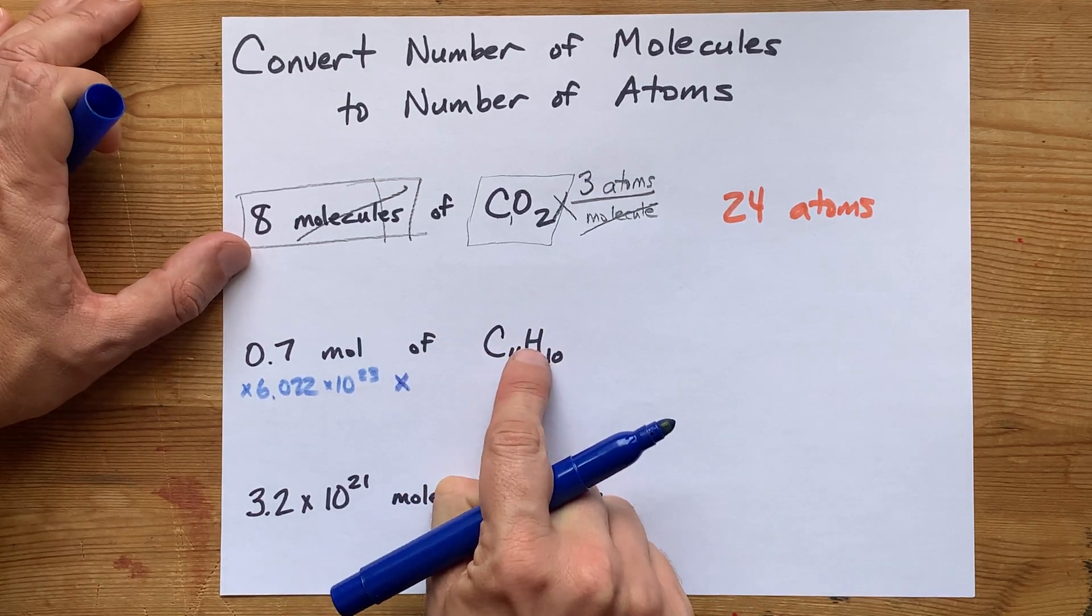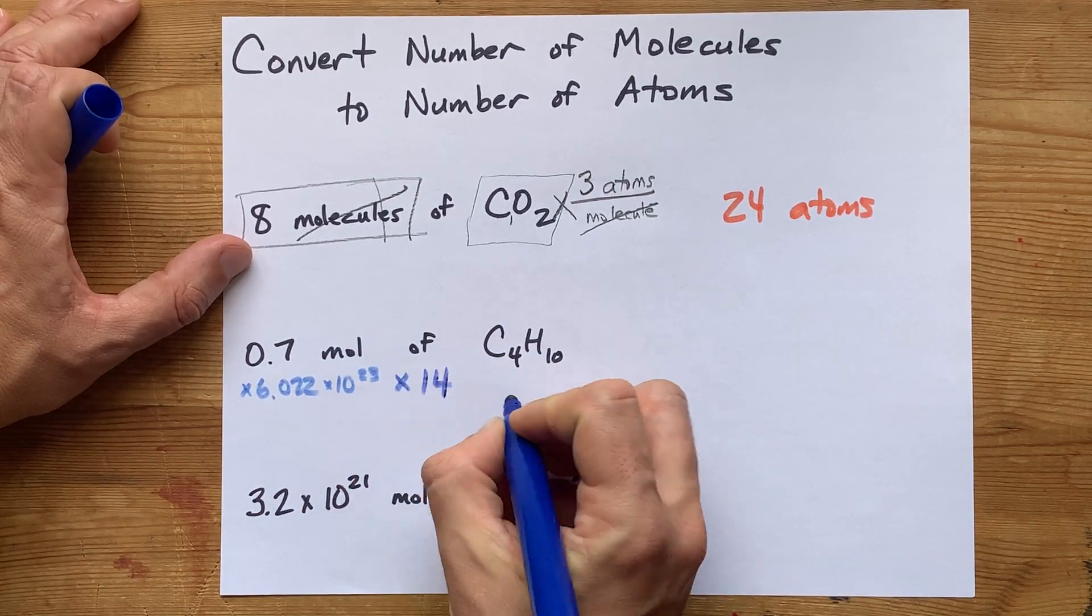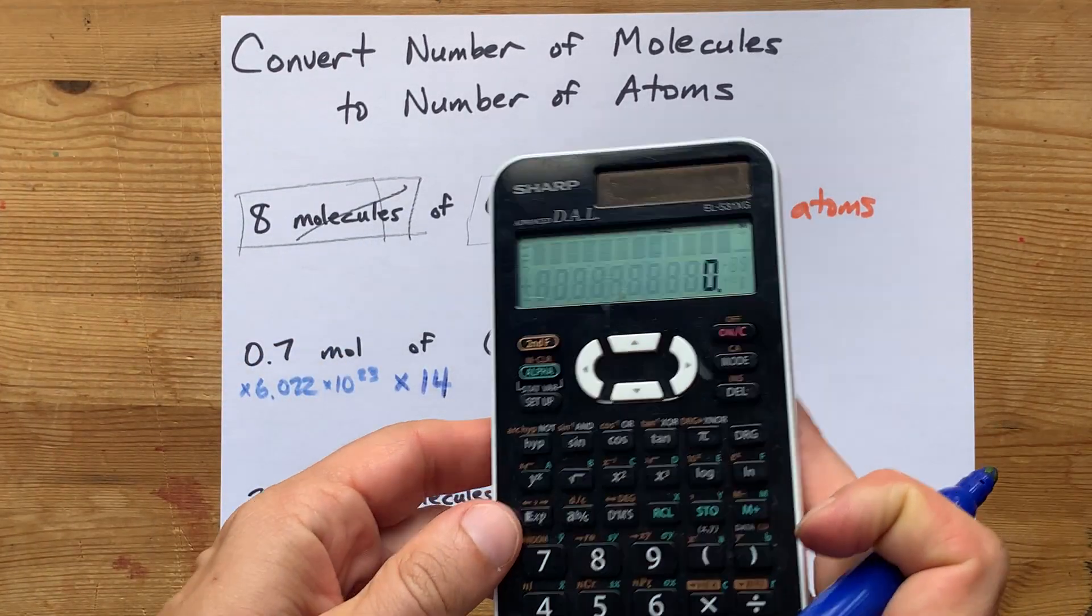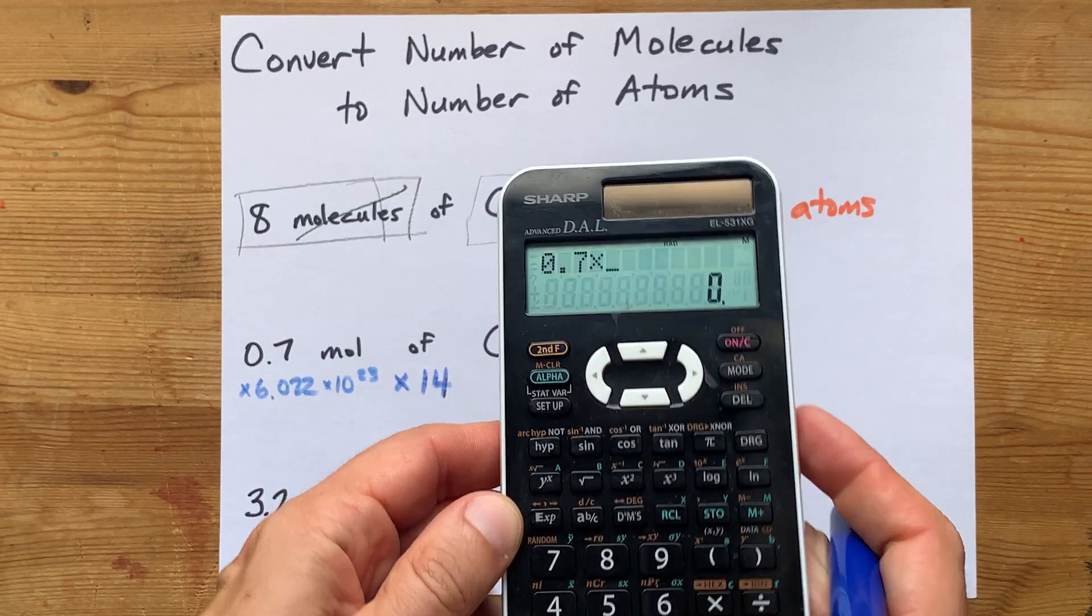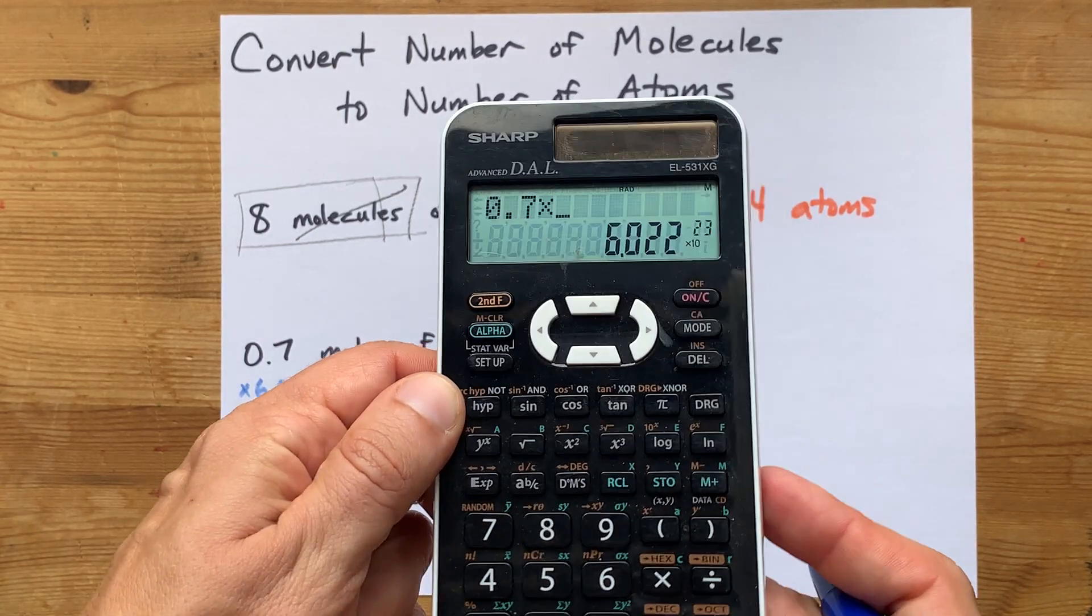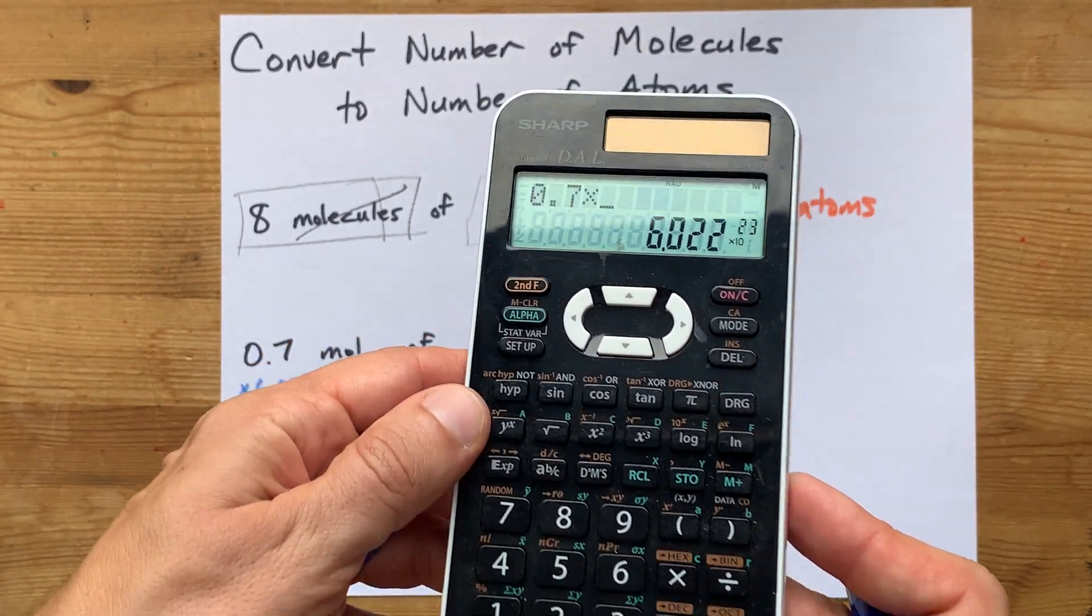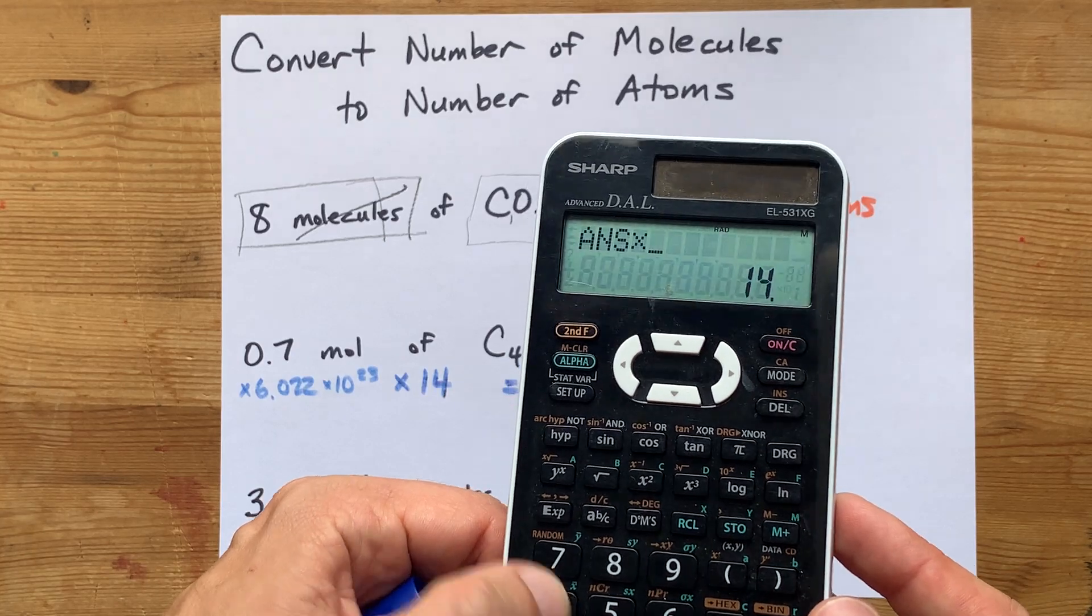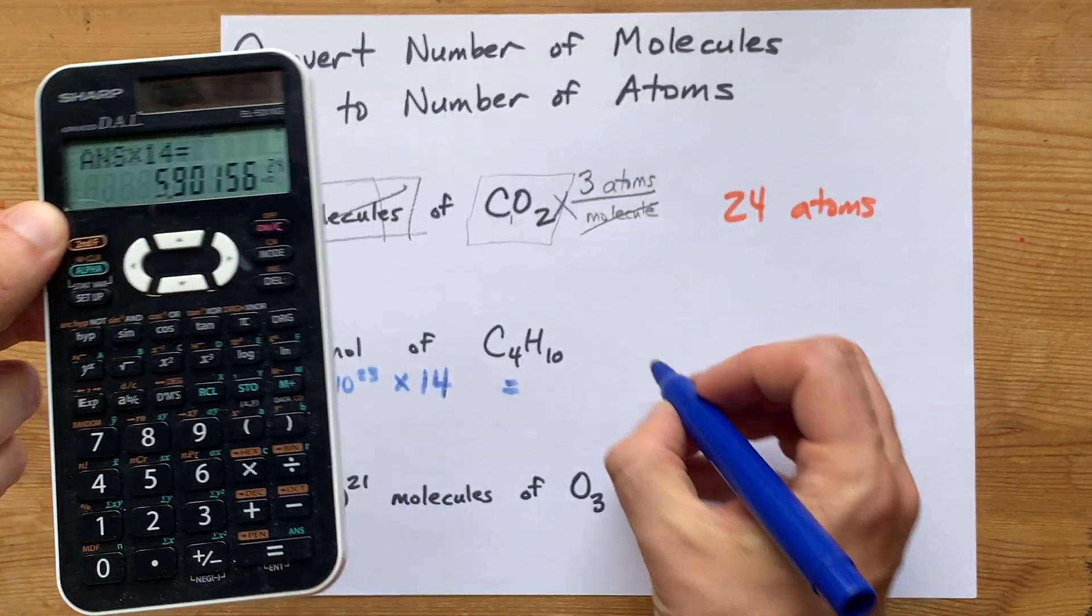Four of those and 10 of those makes 14. I'm going to do all that on my calculator all at once. 0.7 moles times 6.022 times 10 to the power of 23 molecules per mole times 14 atoms per molecule.